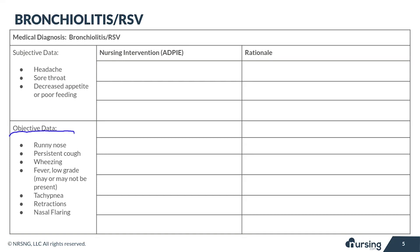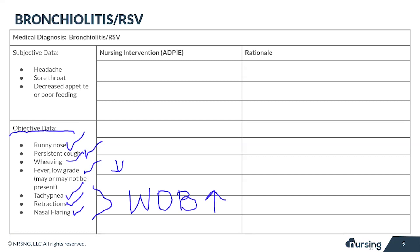The objective data you want to be aware of includes that runny nose, a persistent cough, wheezing potentially, and sometimes crackles as well. Fever — usually a low-grade fever, not too high. Then you're going to see symptoms like tachypnea, retractions, and nasal flaring, all of which are indicators of an increase in the child's work of breathing. And because feeding is really likely to be a problem, you're very likely to see symptoms of dehydration as well.